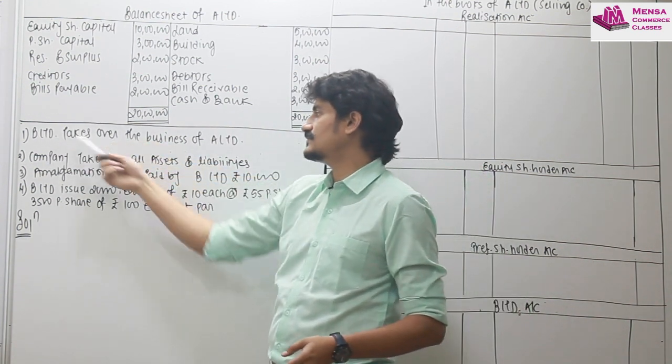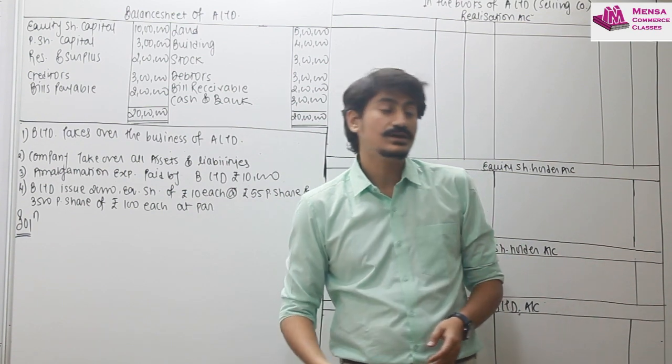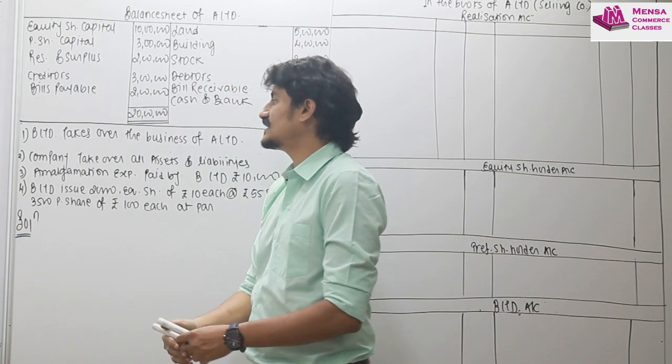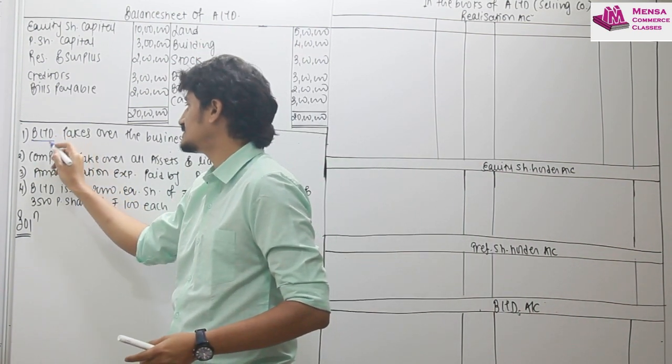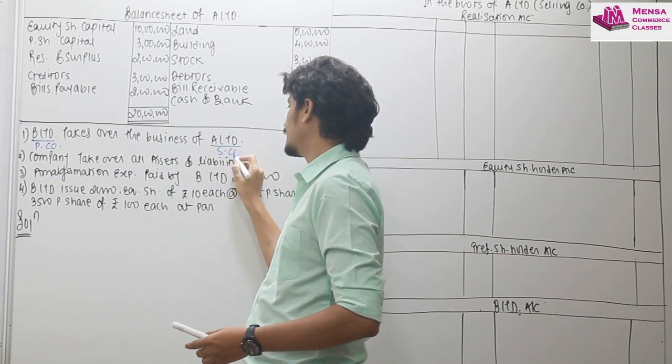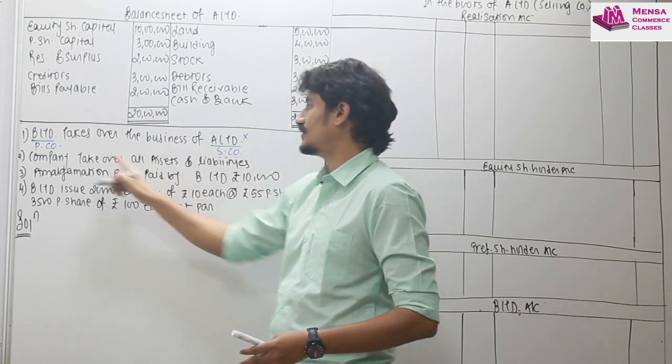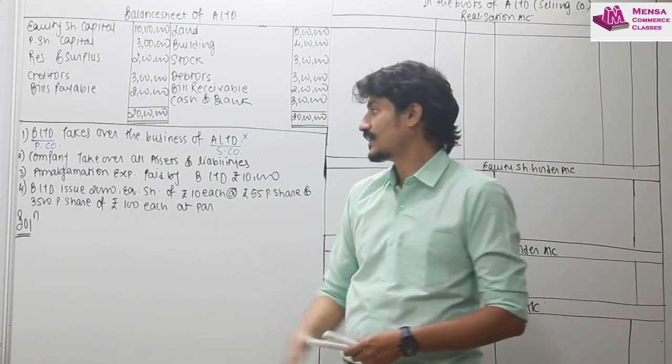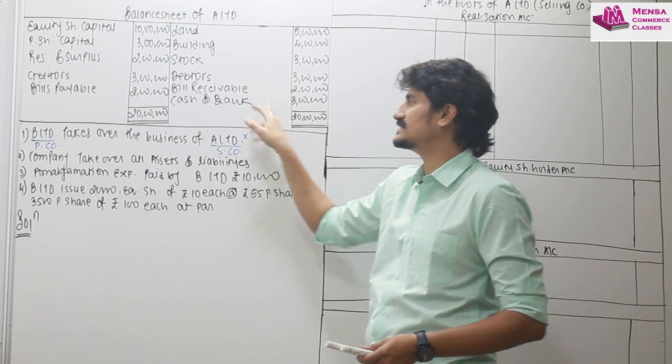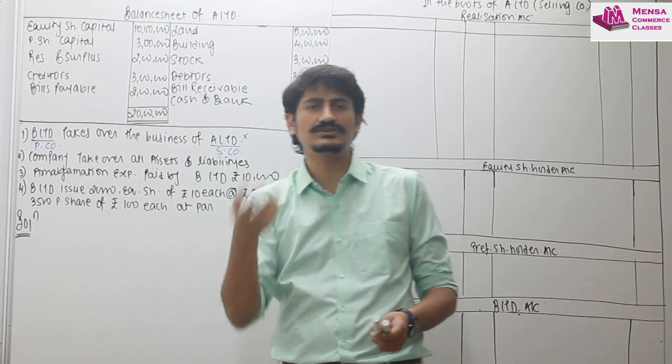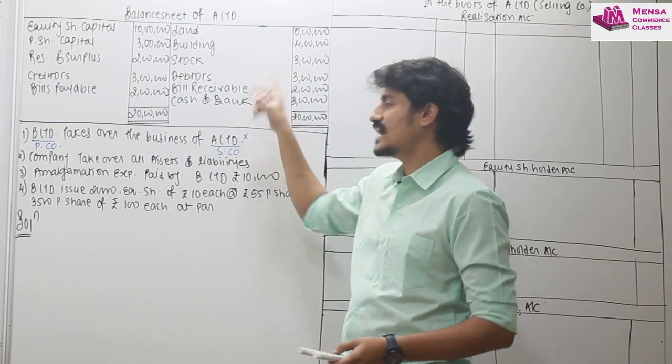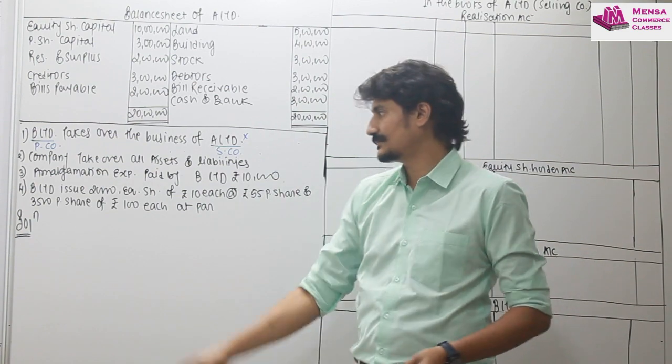Here we go. B limited takes over the business of A limited. So A limited is taken over by B limited. I can say that this is the purchasing company and this is the selling company. So this company is closed and this company is taken over. Now, this company takes over all the assets and liabilities. Entire assets and liabilities are taken over by the company. When they are saying that takes over entire assets and liabilities, it means cash is also taken over by the new company.